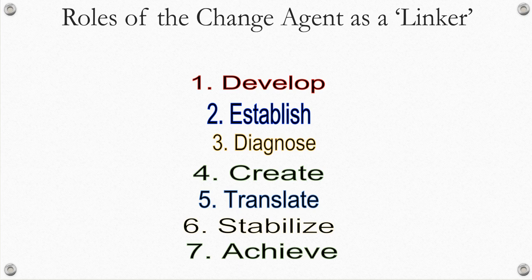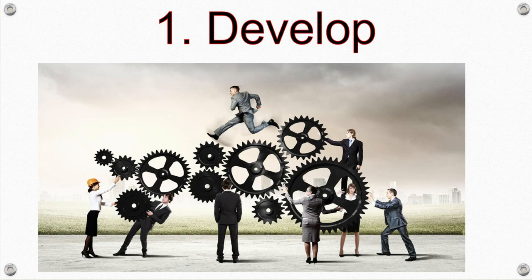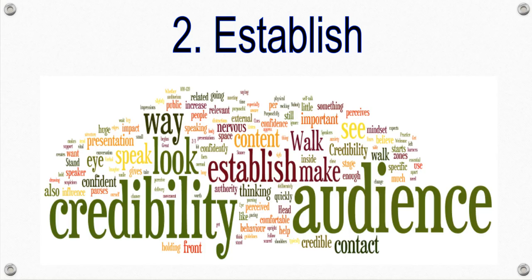Rogers suggested that there is a technical and social gap between change agencies and their audiences. Therefore, a change agent should be the linker who aims to close this gap by playing seven roles. The first role is to develop the need for change by assisting teachers to become aware of alternate and better teaching methods such as gamification and by providing support to overcome potential problems. The second role is to establish credibility and trust with the teachers, which will empower gamification.